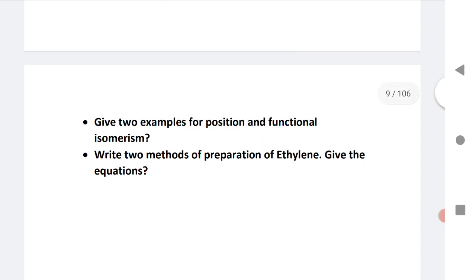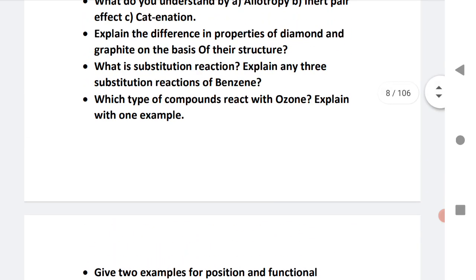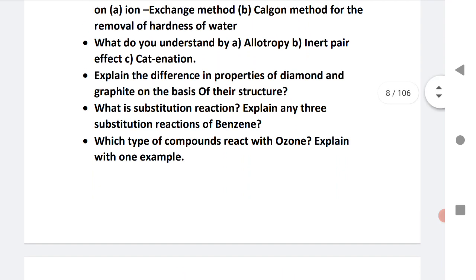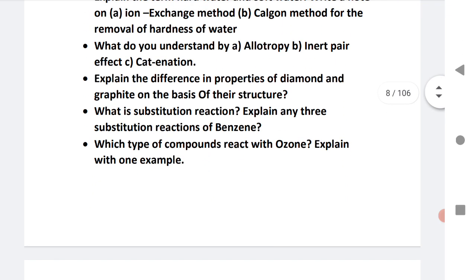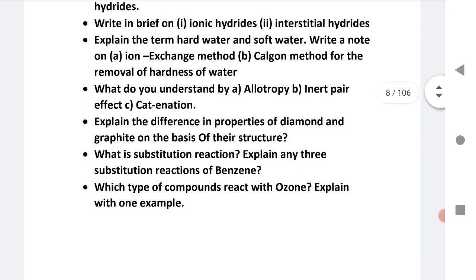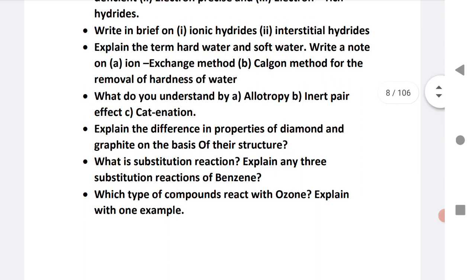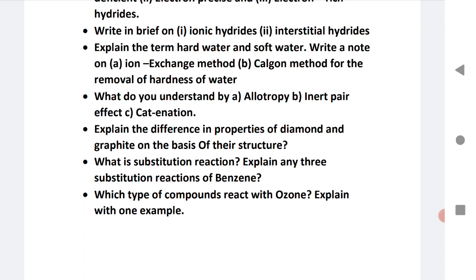Give two examples for position and functional isomerism. Write two methods of preparation of ethylene. These are all SAQ questions for TS and AP. I request AP students read all questions except one that I said is for TS. For TS students, read questions from the model paper. Model paper is in the description, read each and every question.